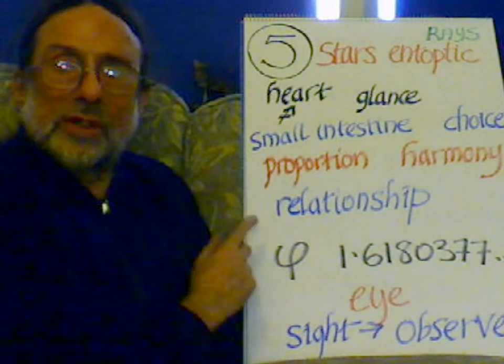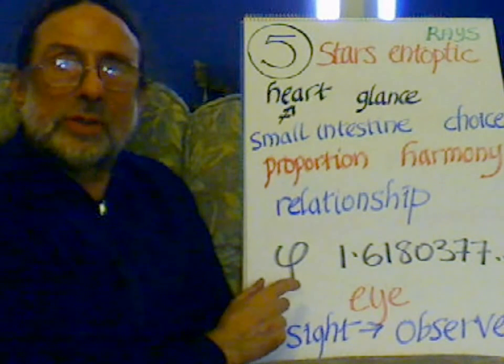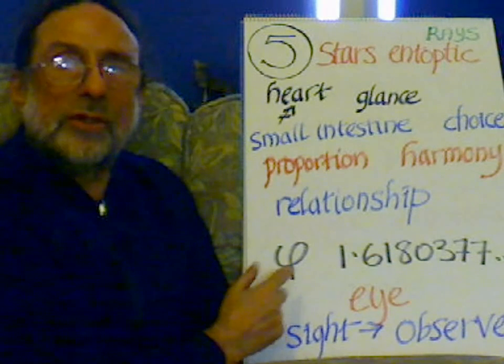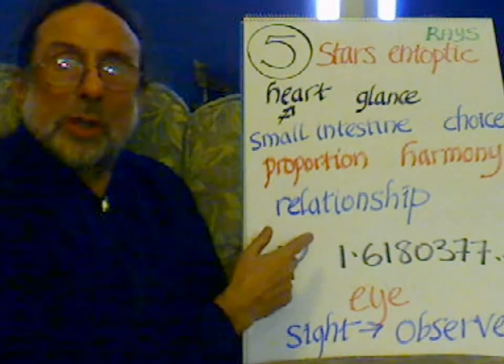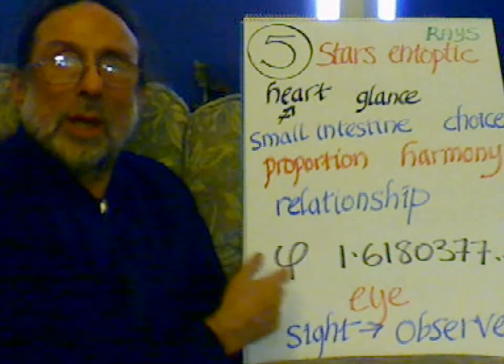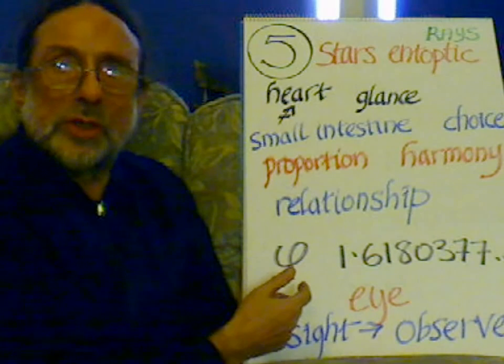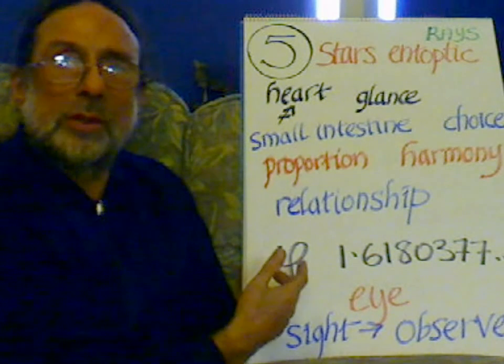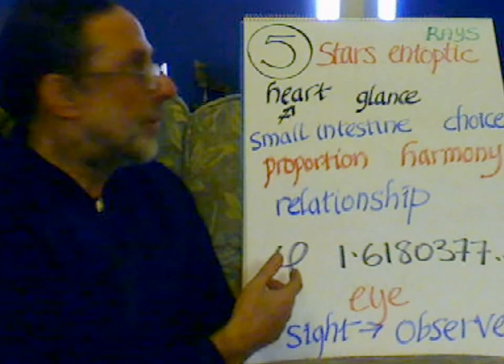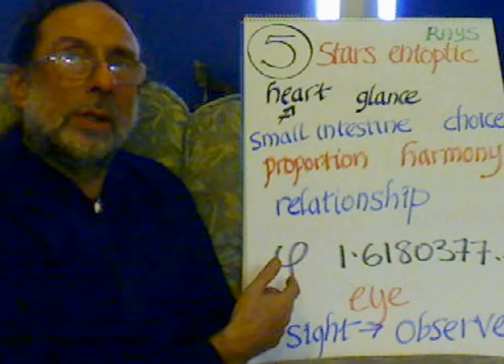This phi, this heart, is basically from the star — like from the Fibonacci series, the petals on a flower. So it's the heart, the secret of the golden flower.